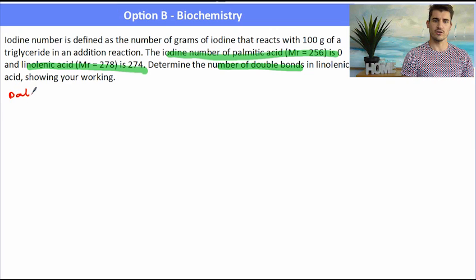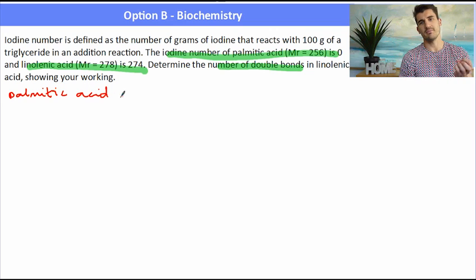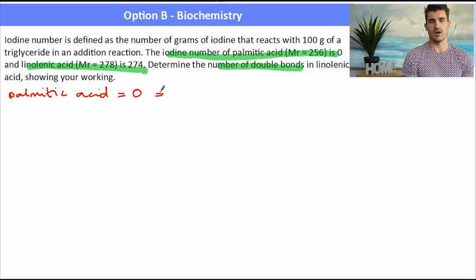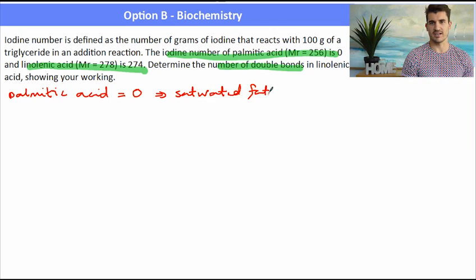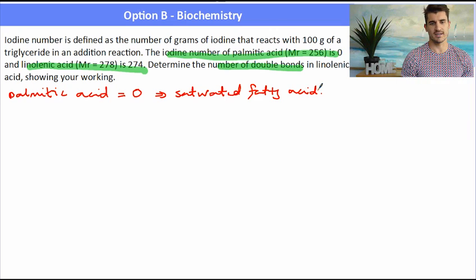Now if we look at palmitic acid first, well it's got an iodine number of zero. That means that it does not react with iodine. So what does that say about that fat? Well it says that it must be a saturated fat. It has no double bonds because it can't react with the iodine.